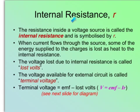Internal resistance. The resistance inside the voltage source, like a battery, is called the internal resistance. The symbol is small r. When current flows through the source, some of the energy supplied to the charges is lost as heat to the internal resistance.